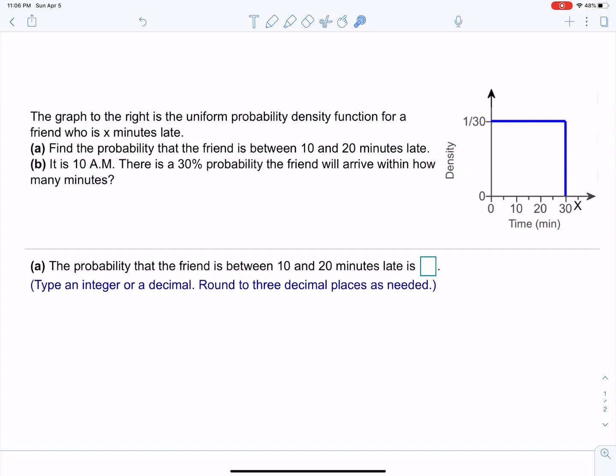Let's read it. The graph to the right is a uniform probability density function for a friend who is x minutes late. Part a: find the probability that the friend is between 10 and 20 minutes late. Part b: it is 10 a.m. There's a 30% probability the friend will arrive within how many minutes?